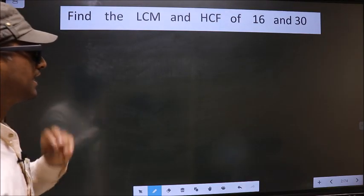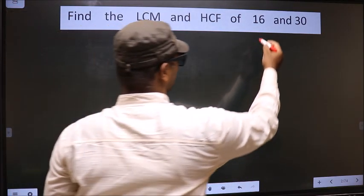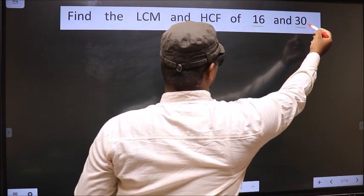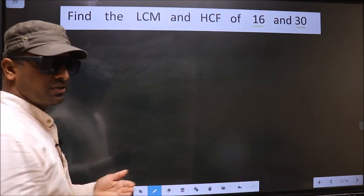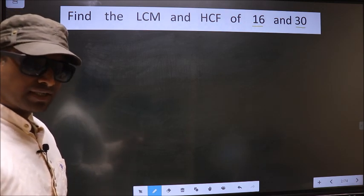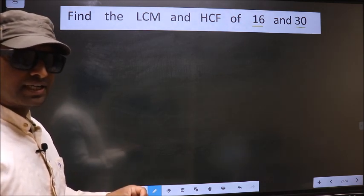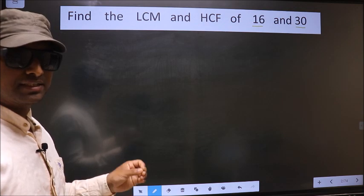Find the LCM and HCF of 16 and 30. To find the HCF and LCM, first we should do the prime factorization of each number separately.